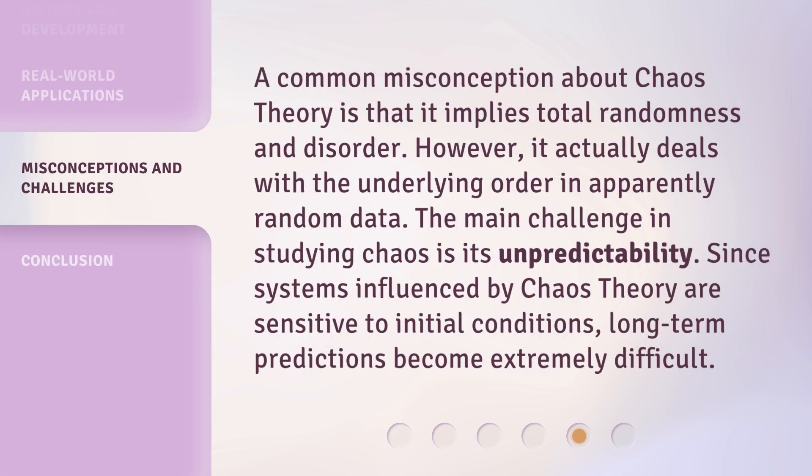A common misconception about chaos theory is that it implies total randomness and disorder. However, it actually deals with the underlying order in apparently random data. The main challenge in studying chaos is its unpredictability. Since systems influenced by chaos theory are sensitive to initial conditions, long-term predictions become extremely difficult.